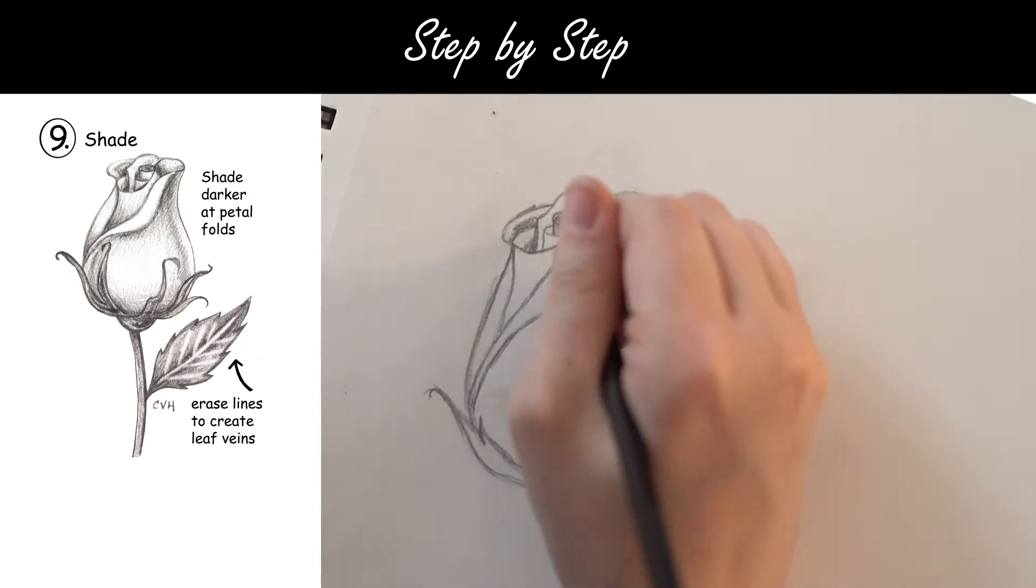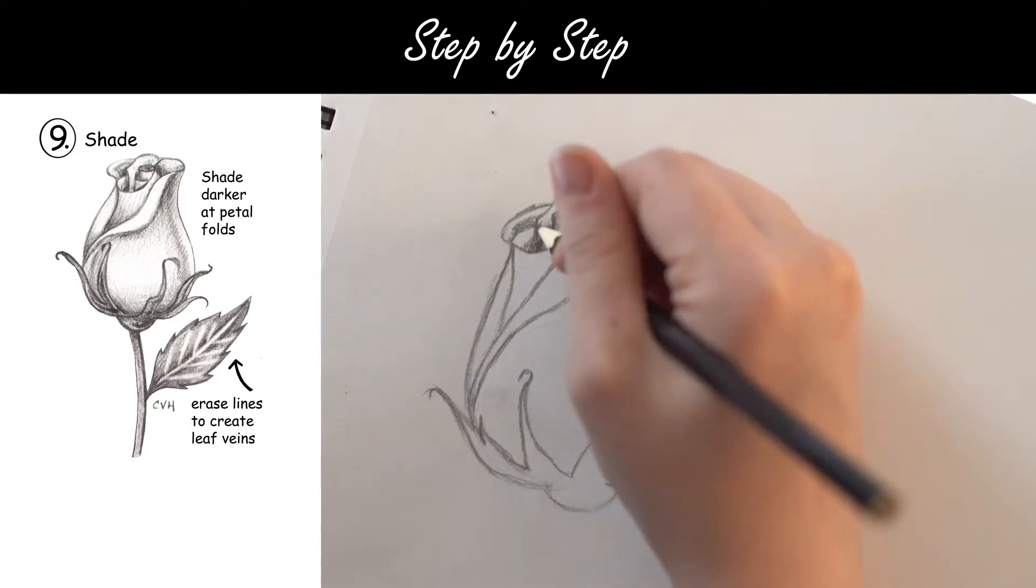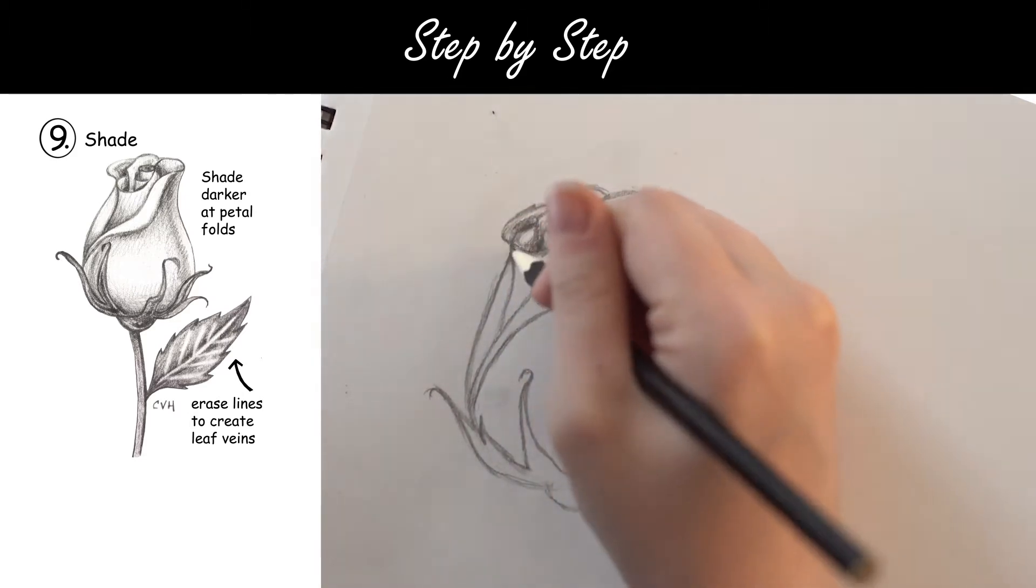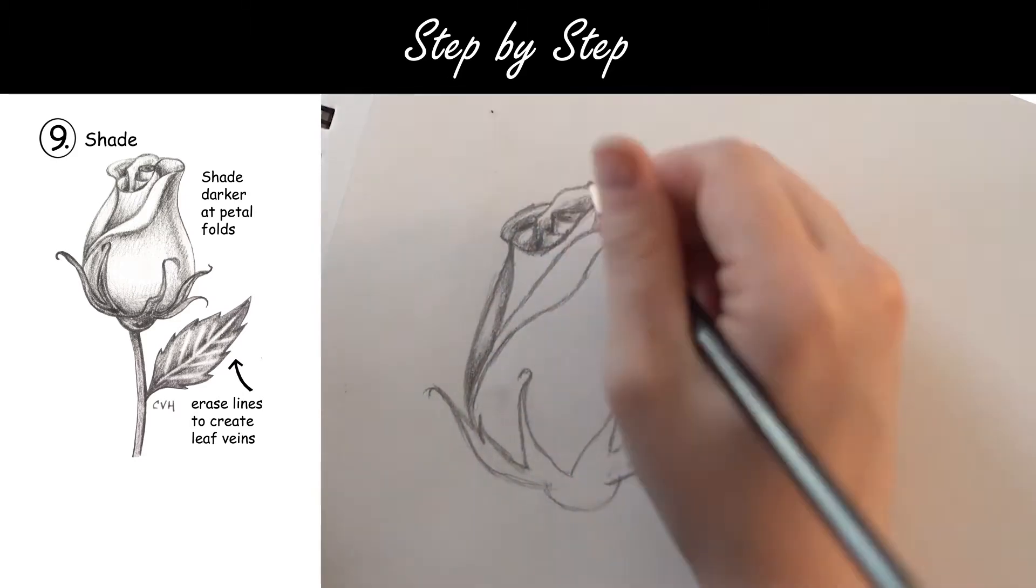Step 9. Shade darker at the petal folds. For the leaf accent, erase lines to create leaf veins.